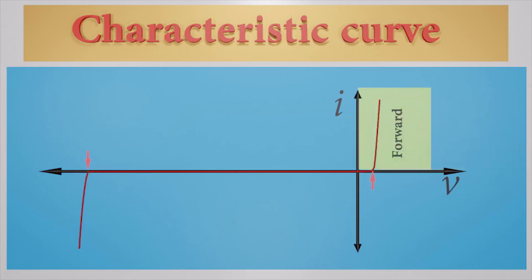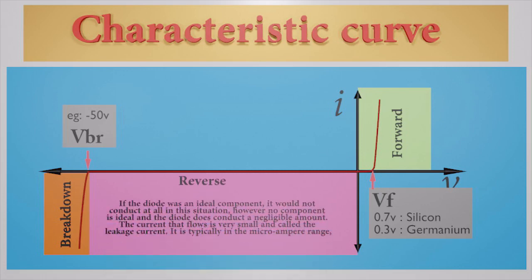We can clearly identify three regions of this curve: forward region, reverse region, and the breakdown region. The forward voltage is 0.7 volts for silicon diodes and 0.3 volts for germanium diodes. Normally the breakdown voltage can go up to minus 50 volts.